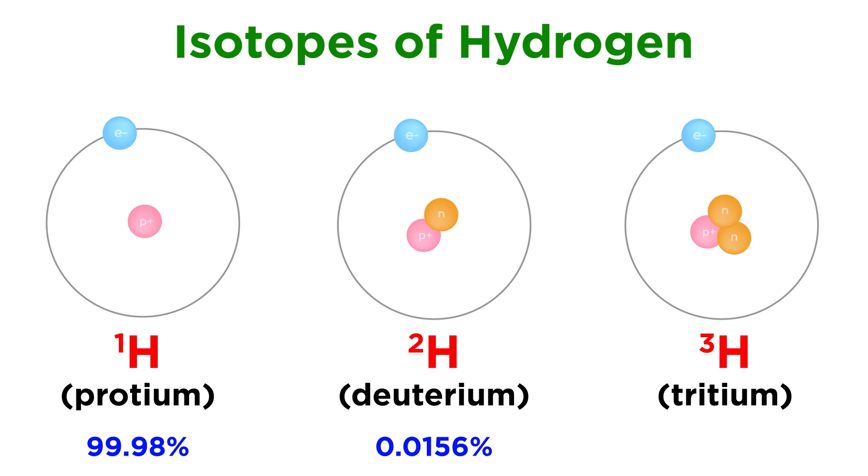This is followed by deuterium at 0.0156%, which has application as a moderator in nuclear reactors, and is also frequently utilized for isotopic labeling experiments in chemistry.